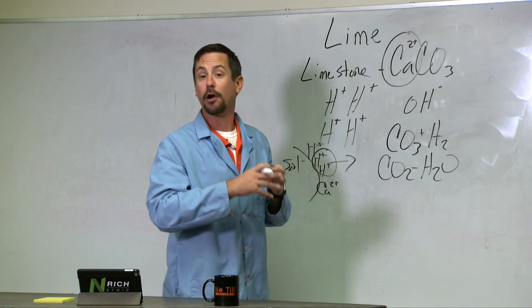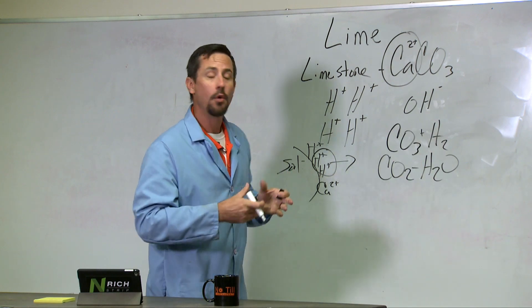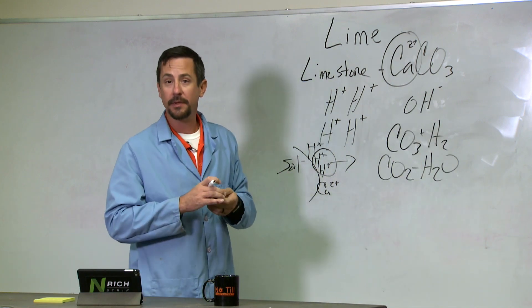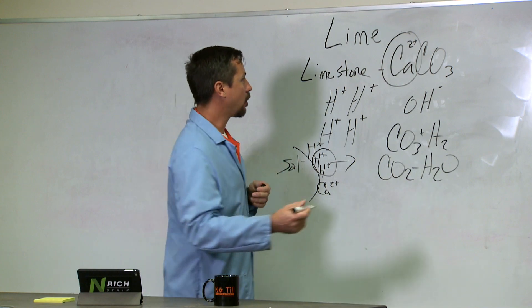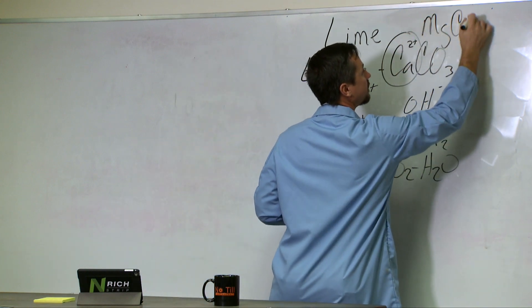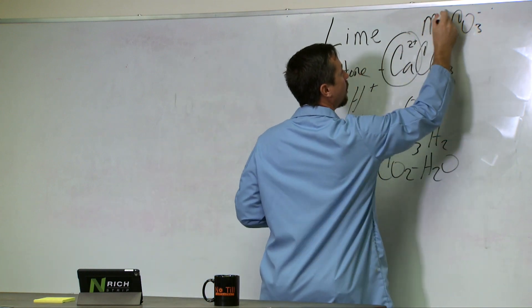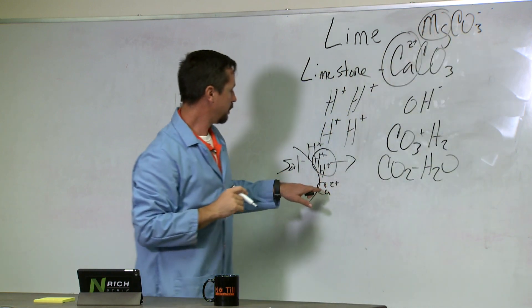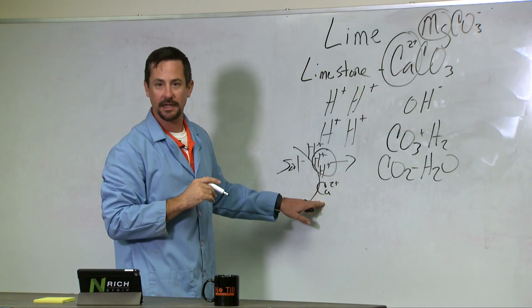While calcium carbonate is our primary lime source, we have other lime sources called dolomitic lime - that is magnesium carbonate. It's just as good a source. We're just using magnesium to replace the hydrogen instead of calcium.